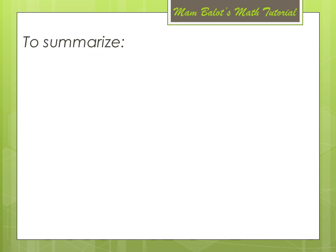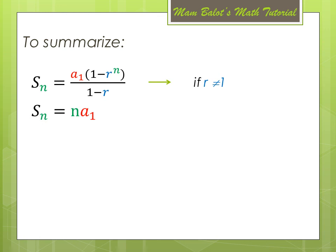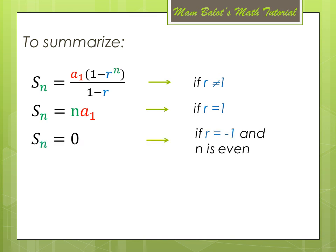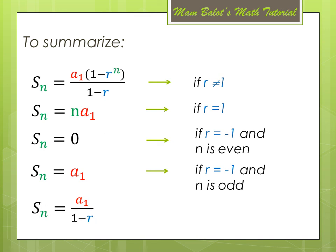To summarize the different formulas: S sub n equals a sub 1 times (1 minus r to the n) over (1 minus r) when r is not equal to 1. If r equals 1, use S sub n equals n times a sub 1. If r equals negative 1, S sub n equals 0 when n is even, and S sub n equals the first term when n is odd. And S sub infinity equals a sub 1 over (1 minus r) when r is between negative 1 and 1 and n is infinite.